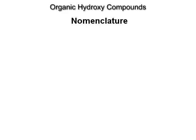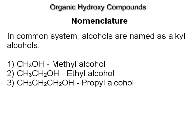Nomenclature. In the common system, alcohols are named as alkyl alcohols. CH3OH is methyl alcohol, CH3CH2OH is ethyl alcohol, and CH3CH2CH2OH is propyl alcohol.